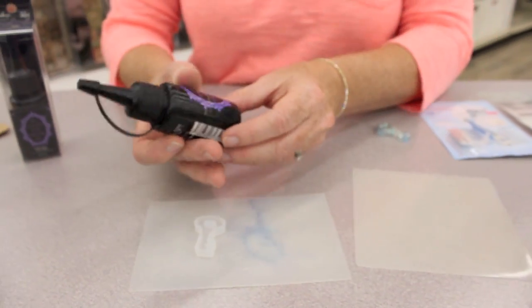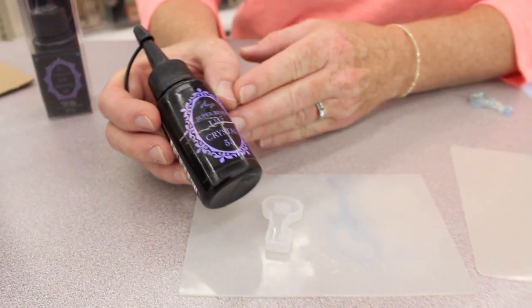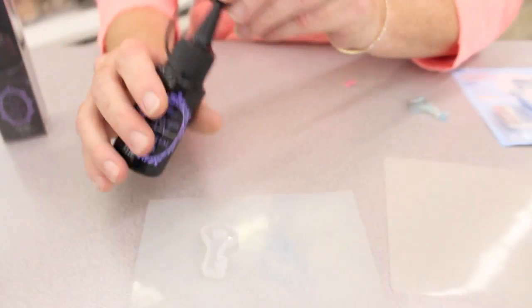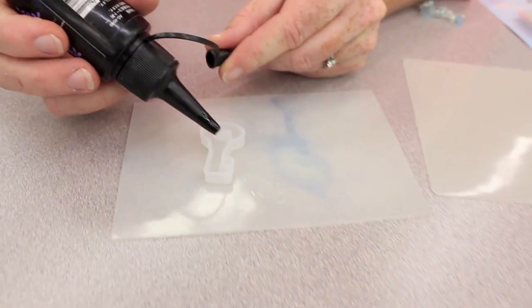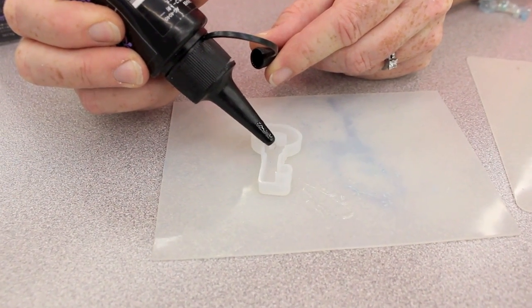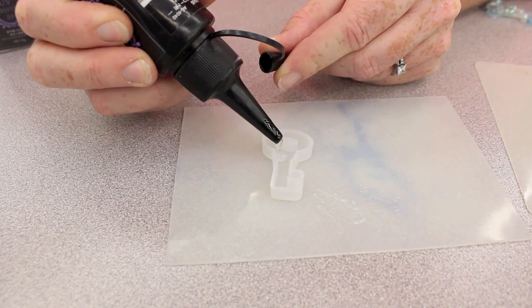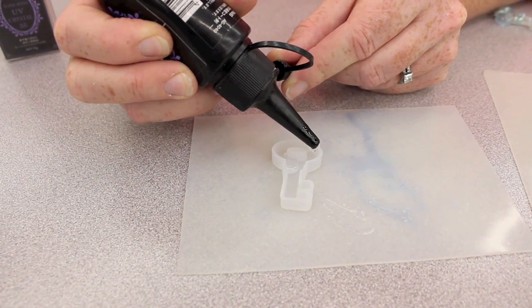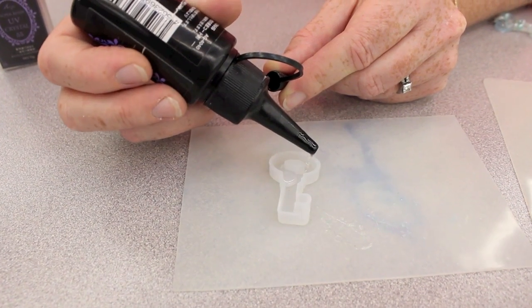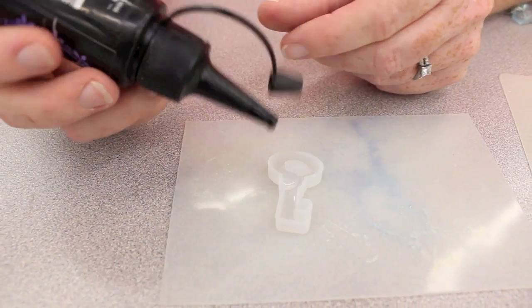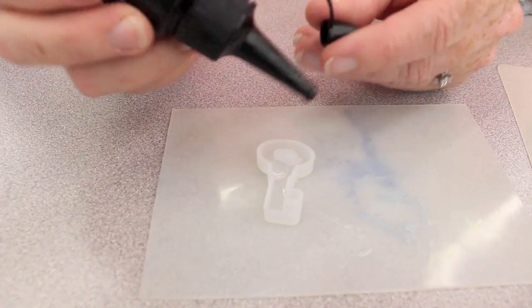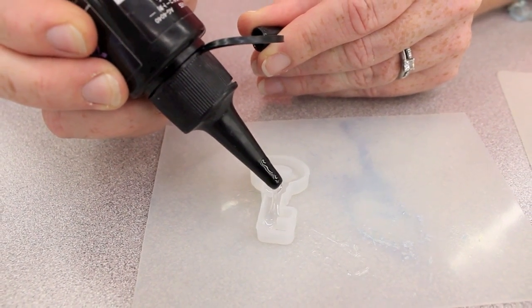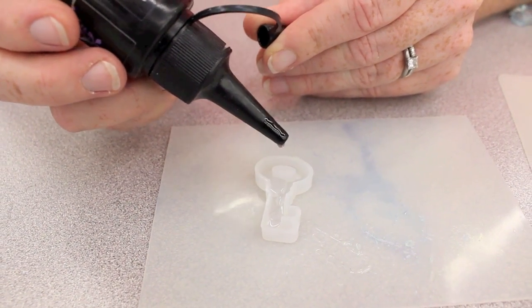All right so we will get started. First of all you're going to take the super resin UV crystal, again this is a one part resin and we are going to pour just enough in to cover the bottom. Now you never want to shake the bottle because it would create bubbles so you don't want to do that. So I'm again just pouring a small amount to cover the bottom. I'm going to pour in a little bit and then I'm going to push it around with my toothpick.